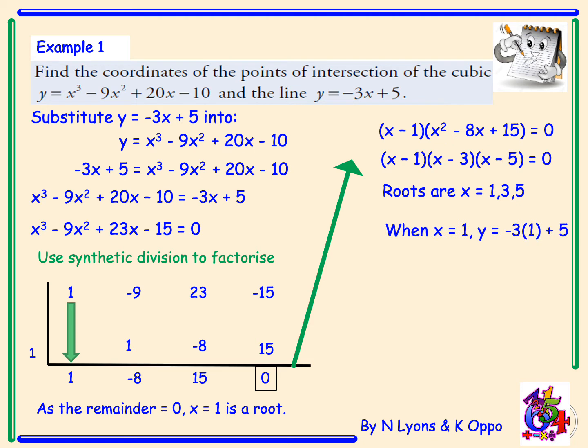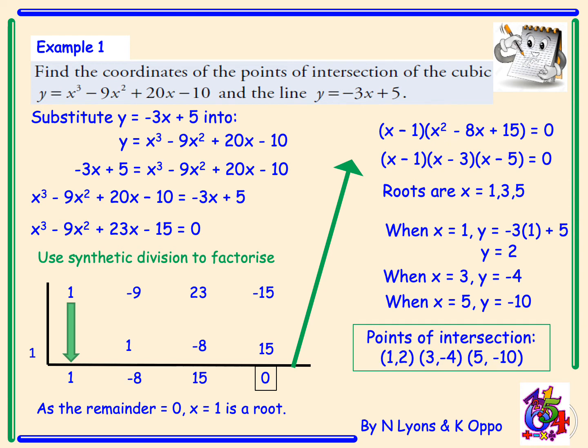Now we were asked for the coordinate points, so we need to calculate our y-coordinates. When x equals 1, y equals negative 3 multiplied by 1 plus 5 — putting 1 into our straight line equation — the answer is 2. When x equals 3, putting 3 into our straight line equation, y equals negative 4. And when x equals 5, y equals negative 10. Therefore our points of intersection between the line and the cubic are (1, 2), (3, −4), and (5, −10).